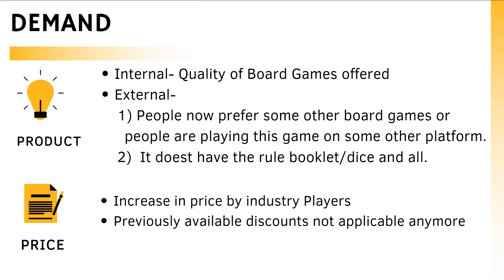External factors include substitutes or complementary goods. People now prefer other board games or are playing on online platforms. During lockdown, there was a shift in consumer demand toward online games, which is one substitute leading to a decrease in sales. Complementary goods available in the market offering the product at a better price with extras like a rule booklet and dice could also be a factor.